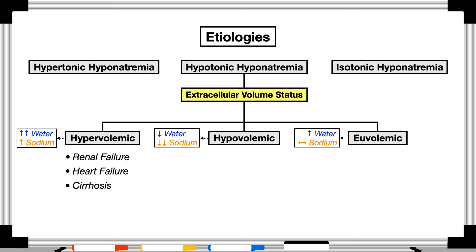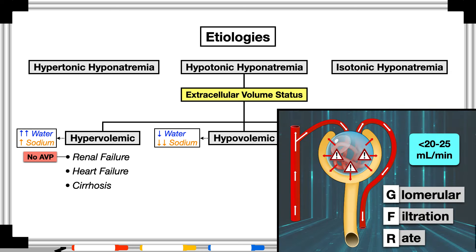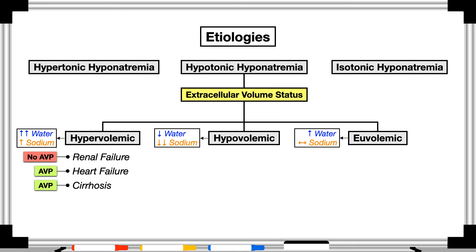Examples of hypervolemic hyponatremia include renal failure, heart failure, and cirrhosis. Cases related to renal failure happen independent of arginine vasopressin — they develop primarily from a low glomerular filtration rate and therefore a decline in the nephron's ability to handle the fluid and electrolyte load of the blood plasma. Patients typically face this issue when the GFR dips below 20 to 25 milliliters per minute. With heart failure and cirrhosis, cases are arginine vasopressin dependent.